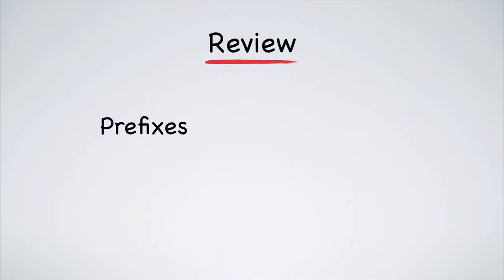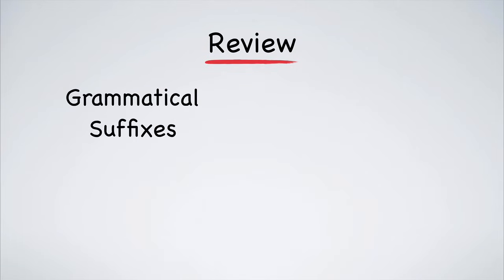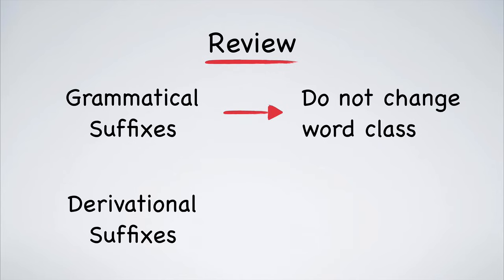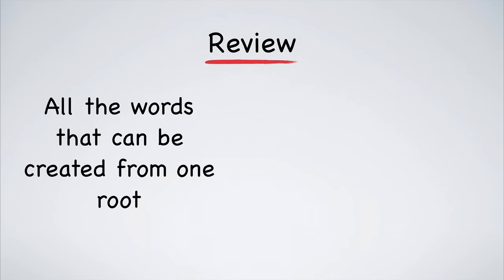Prefixes are added to the beginning of a word and suffixes are added to the end. Again, there are two types of suffixes: grammatical and derivational. Grammatical affixes do not change the class of a word. Derivational suffixes, on the other hand, do change the word's class. Finally, all the different words that can be created by adding affixes to a root are called a word family. Mastering word families is one of the keys to English fluency.